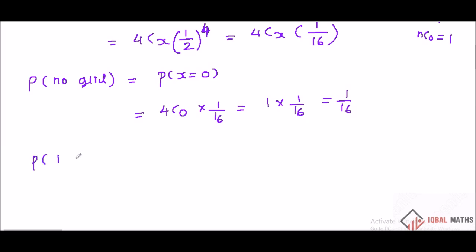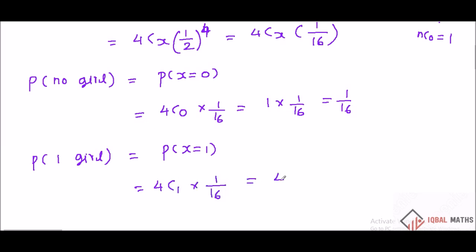Next, P of 1 girl. x equal to 1. P of X equal to 1 is 4C1 into 1 by 16. 4C1 is 4. So 4 into 1 by 16 equals 4 by 16, which is 1 by 4.